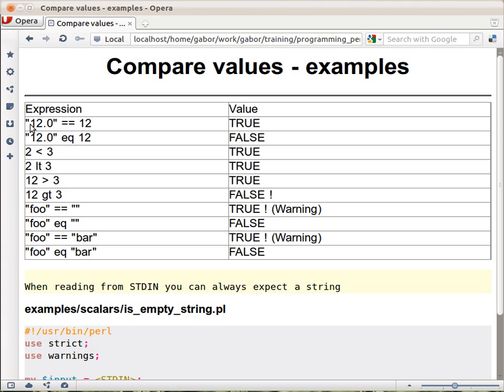If you take this comparison, the string 12.0 equal equal to 12, it's going to be true. Why is that? Because this is a numerical operator, so on the right hand side that's a number already. On the left hand side this is a string, but it needs to be turned into a number, and this when it turns to a number is equal to 12. So that's why this expression is going to be true.